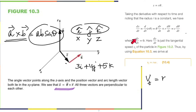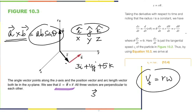dθ/dt is angular velocity, and dS/dt is linear velocity. So just now we connected linear velocity with angular velocity. The formula we get: linear velocity equals R times omega. This is also called tangential velocity — because it's always along the tangent.